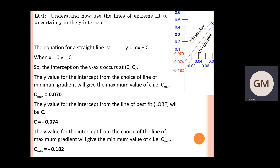You can see the graph has been moved to the top right-hand corner so you can visualize what's going on. The equation for a straight line is y = mx + c, and when x equals zero, y equals c, so the intercept on the y-axis occurs at (0, c). The y-value for the intercept from the line of minimum gradient gives you the maximum value of c — that is c_max — which in this graph equals 0.070, as seen in the graph on the right.